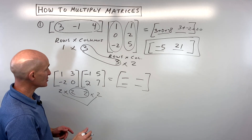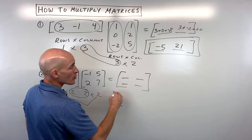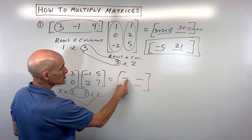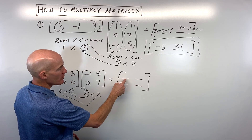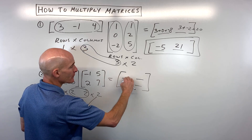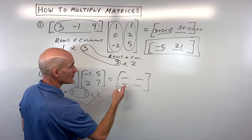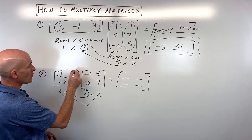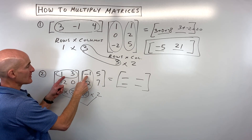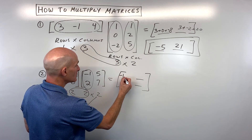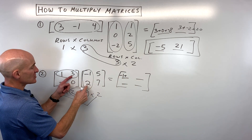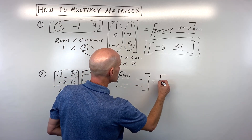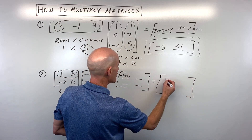Now let's do our calculations. You can do them in any order. I like to work backwards — what position is this element in? It's in the first row, first column. So I take the first row times the first column: one times negative one is negative one, plus three times two is six. Add those together and put it in our final matrix: five.